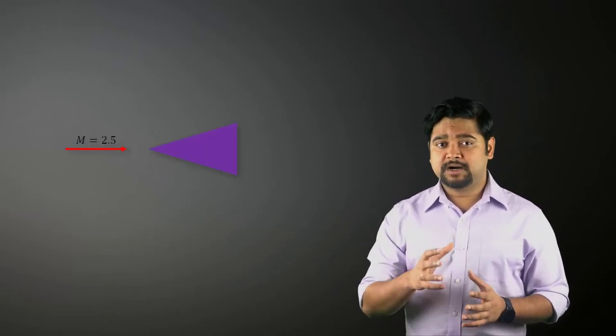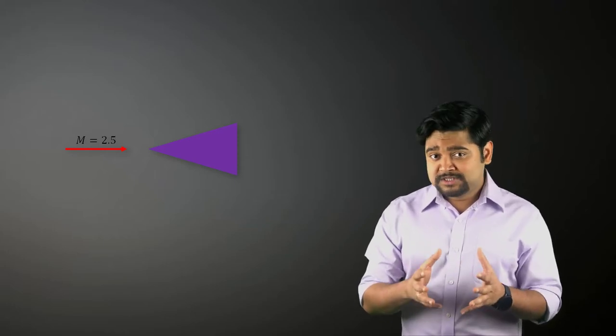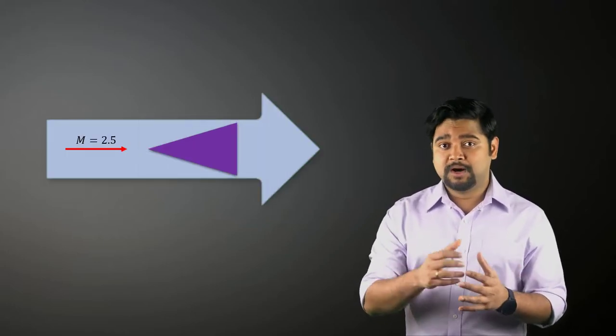Let's say we want to conduct an experiment to study how an object interacts with the Mach 2.5 flow. To do this experiment, we would obviously need to create a uniform Mach 2.5 flow.